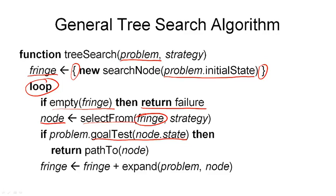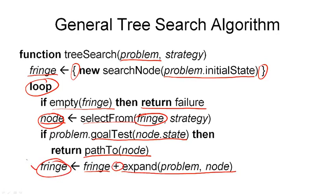If the goal test has succeeded, we return the path to that node as the solution to our search problem. If the current node is not a goal node, we generate all its successors using the expand function. We take the problem and apply the successor function to this node, which gives us a set of actions and new states. Each of these states is turned into a new node together with the action that led to it, and we add these new nodes to the fringe. Then we go back to the beginning of the loop.